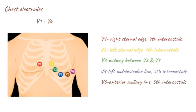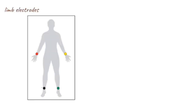V5 is placed at the anterior axillary line, fifth intercostal space. V6 is placed at the left mid-axillary line, fifth intercostal space. The limb electrodes are the left arm electrode, the right arm electrode, the left leg electrode, and the right leg electrode.